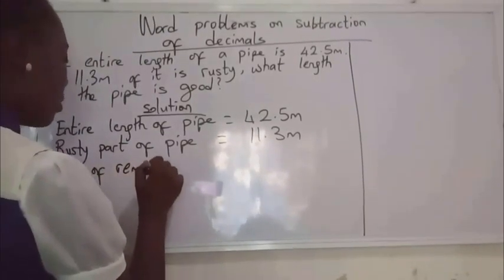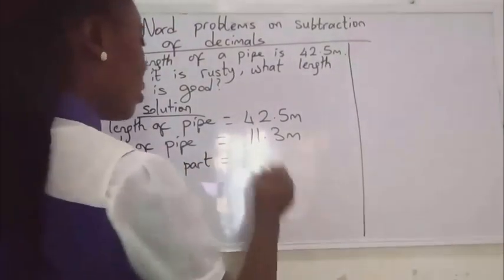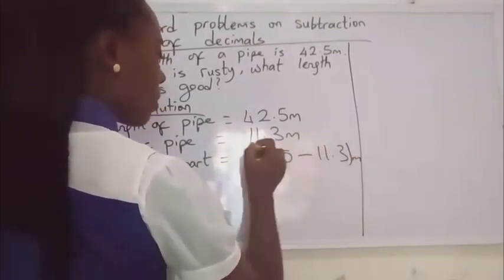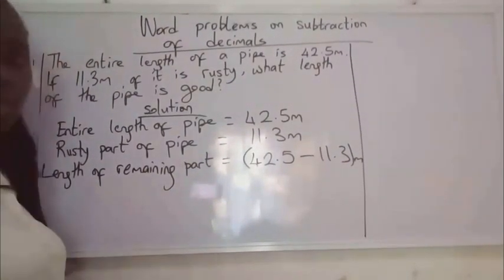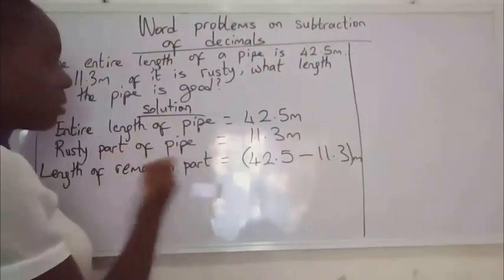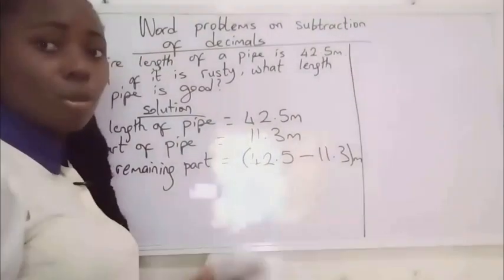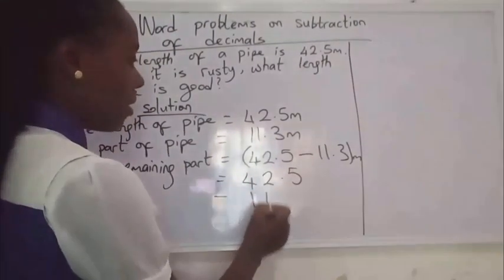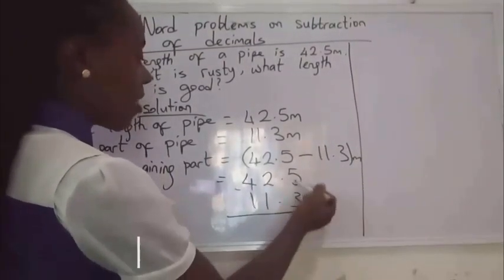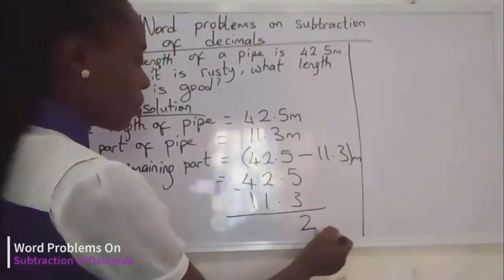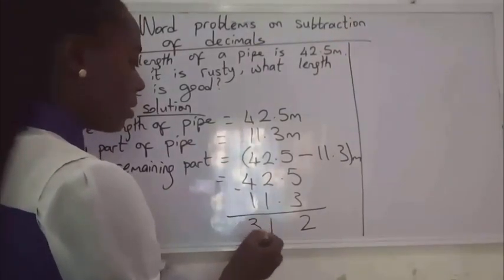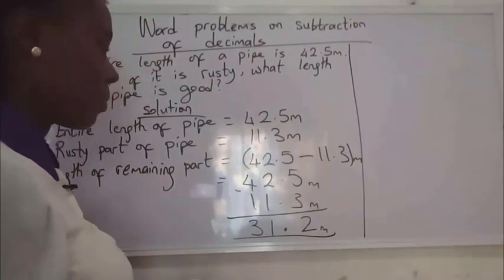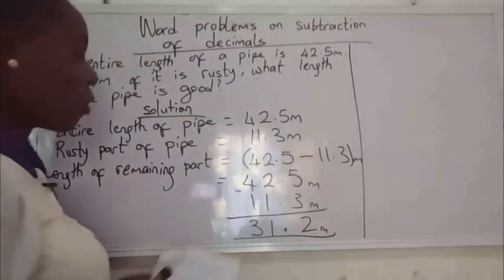The length of the remaining part will be 42.5 minus 11.3 meters. To get the remaining part, simply subtract the rusty part from the entire length. Arranging it: 42.5 minus 11.3. Five minus three is two, two minus one is one, four minus one is three. Remembering our decimal points, the answer is 31.3 meters — that is the length of the remaining part.